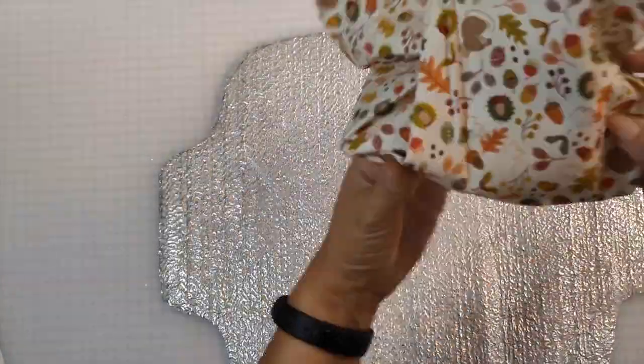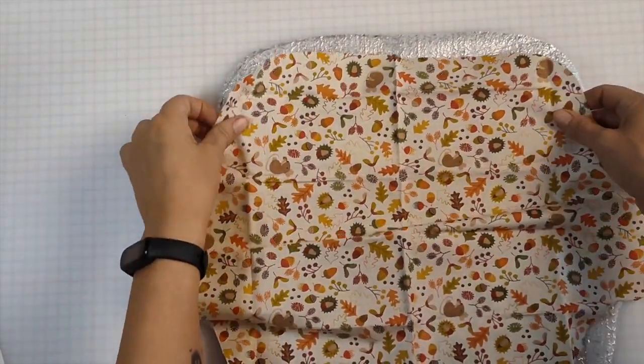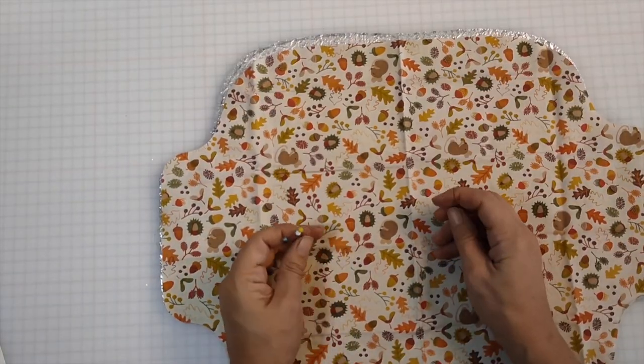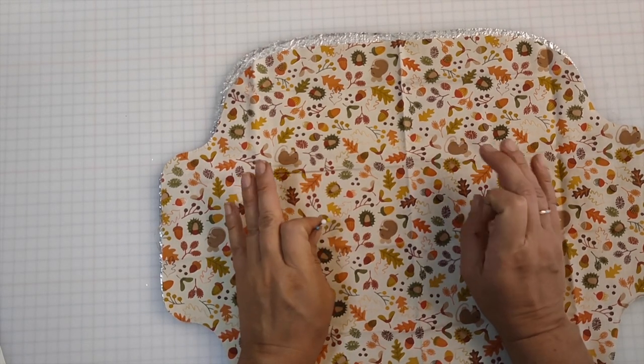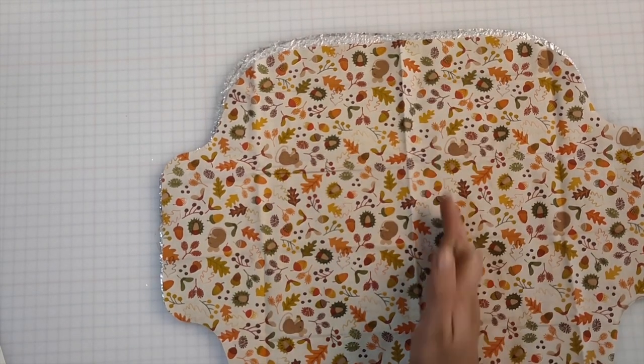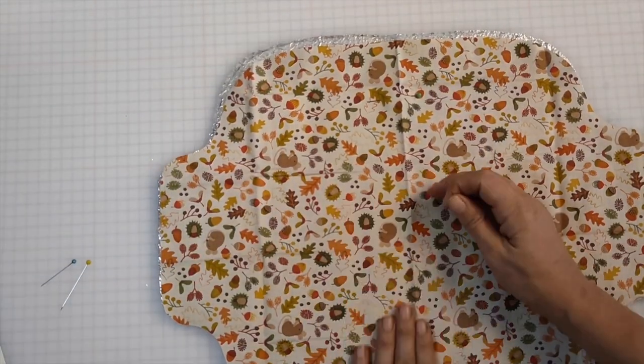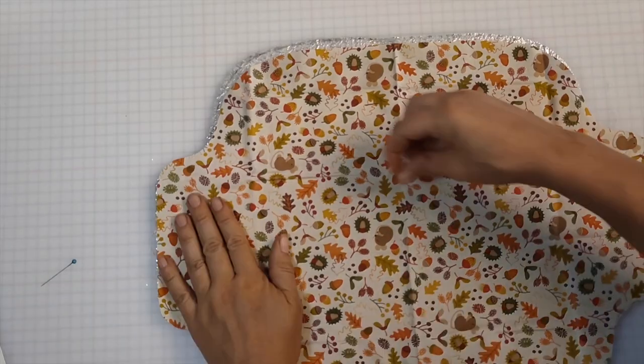Take one of the pieces of wadding, lay it on the table and then place your cotton over the top. Use quilters clips or pins to secure the two pieces of fabric together and then we're just going to run a line of stitching down the centre both ways. If you like you can use a ruler and an invisible ink pen to draw the line first if it makes it easier for you.